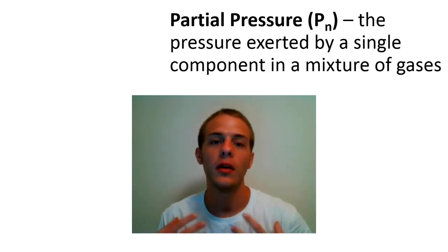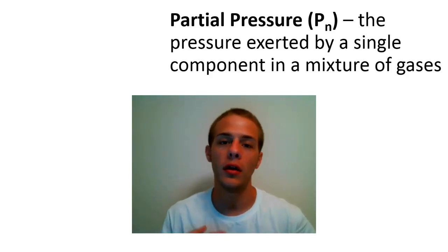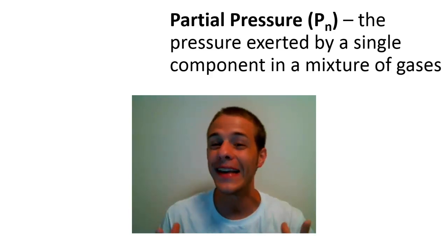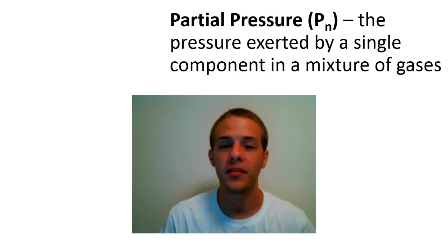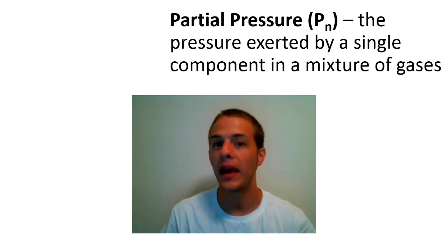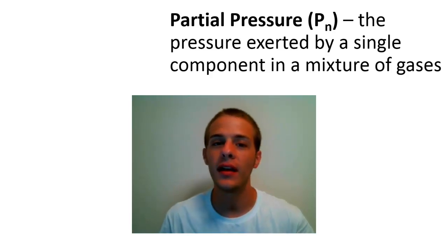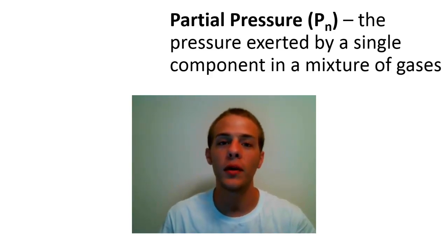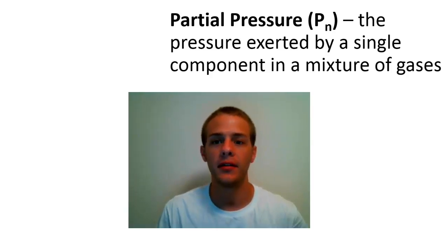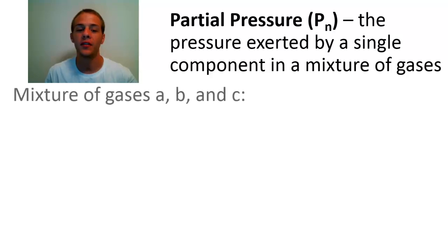We're going to make some simplifying assumptions about a mixture of gases — we're going to assume that all of the gases within that mixture behave as ideal gases. What that means is that each gas within the mixture is going to behave independently of the other gases, as if it were the only gas in that container. That's what we call ideal gas behavior.